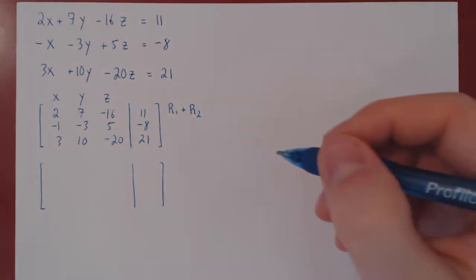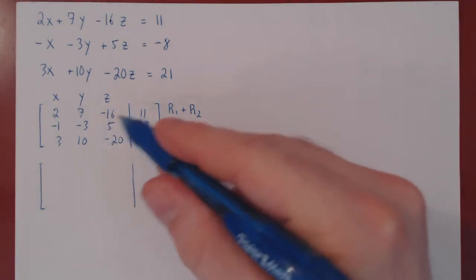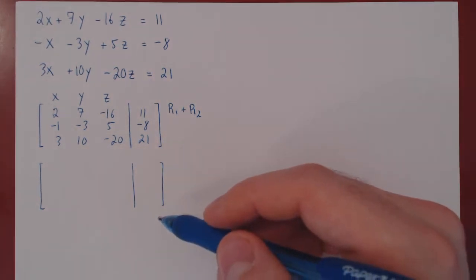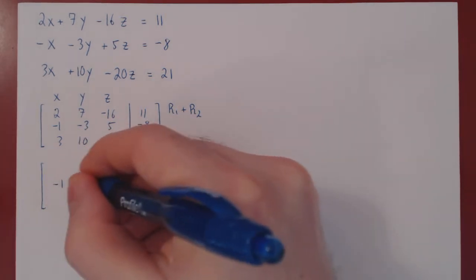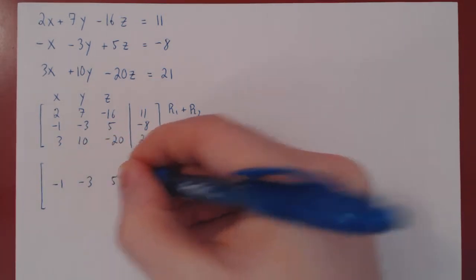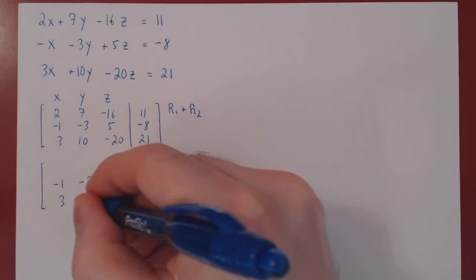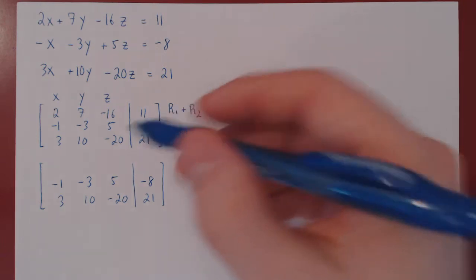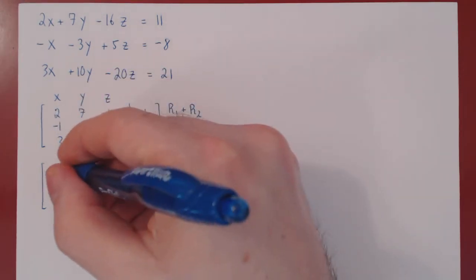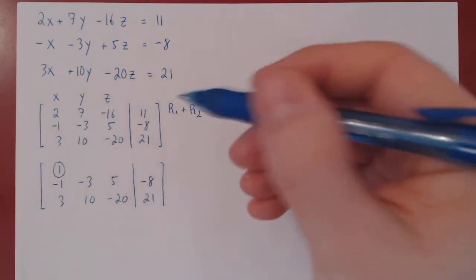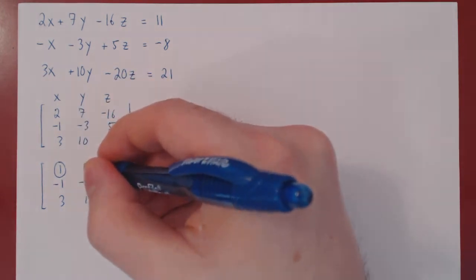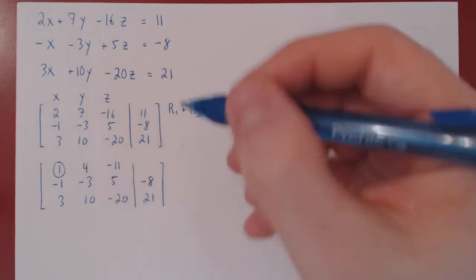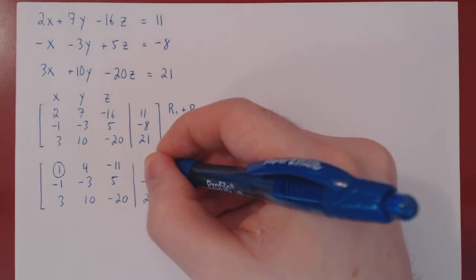A common source of errors is to miscopy rows. As we are only changing the first row, let us recopy the second and the third row, as we are not changing either one of them. Let us apply the operation. So 2 plus negative 1, positive 1, which becomes our leading 1. 7 plus negative 3, positive 4. Negative 16 plus 5, negative 11. 11 plus negative 8, positive 3.